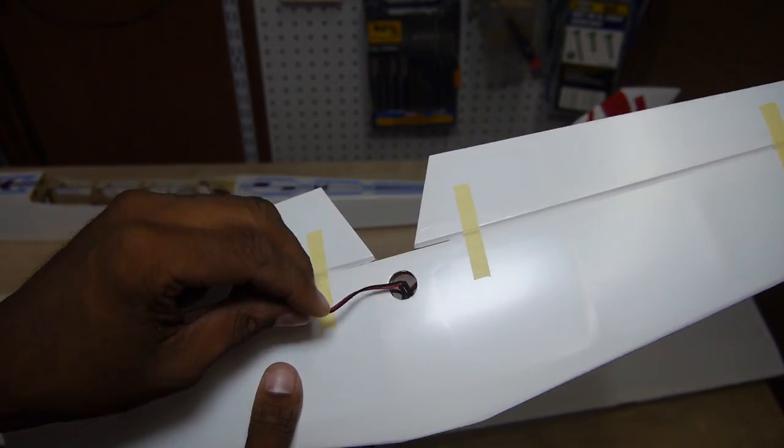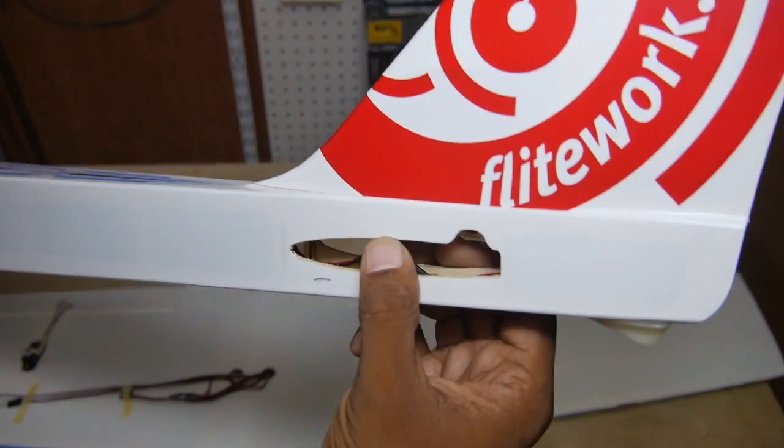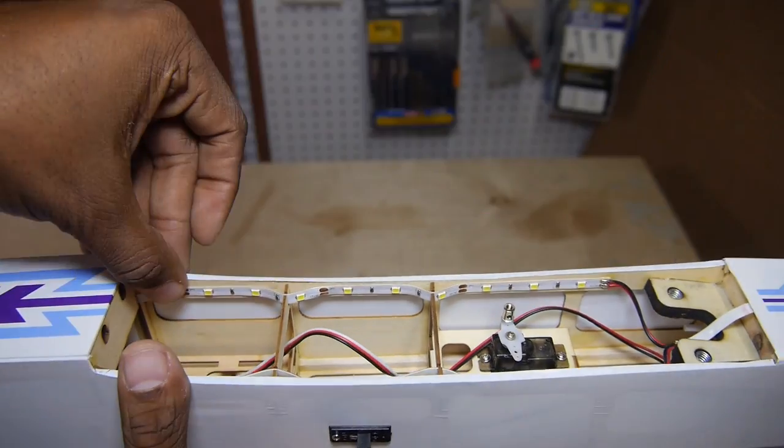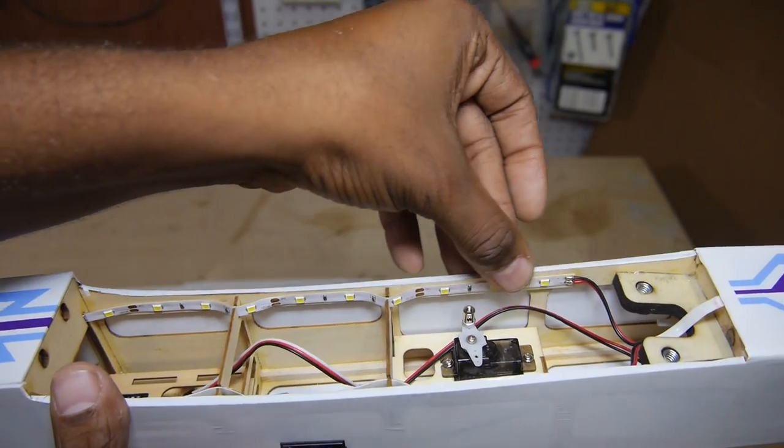All you need to do is plug stuff in. Power connectors are pre-installed in the wings and tail. Did I mention there are lights everywhere?